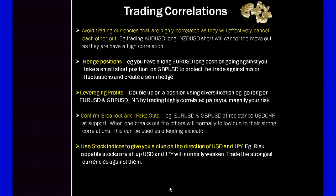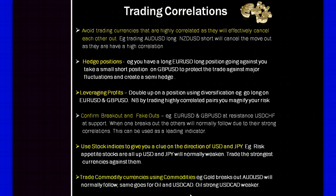There are various tools that I'll explain for checking currency strengths and weaknesses. You can also trade commodity currencies using commodities: gold is highly correlated to the Aussie/US dollar, so when gold is breaking out, the Aussie will normally break out as well. The same occurs with oil and the US dollar/CAD — when oil is strong, USD/CAD is normally weaker.